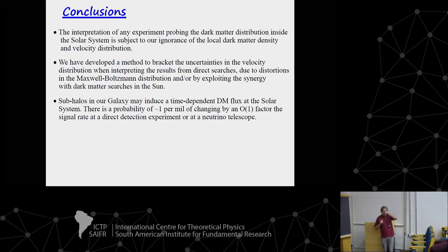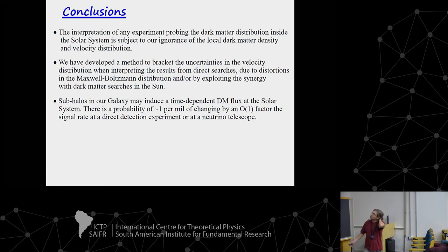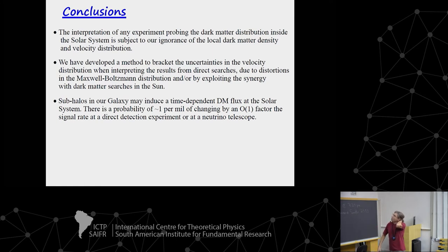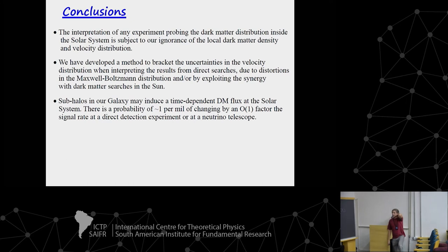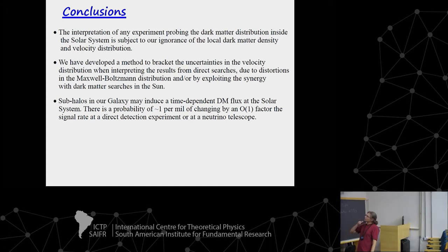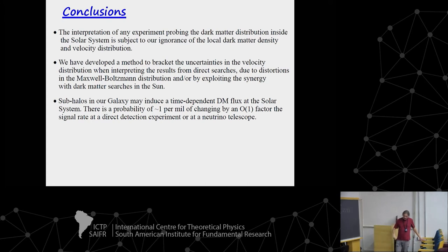In conclusion: the interpretation of any experiment probing dark matter inside the solar system — direct detection, annual modulation, or solar capture — is subject to our ignorance of the local dark matter density and, more importantly, the velocity distribution. This motivated us to construct a method to bracket these uncertainties using complementarity with neutrino telescopes or by considering distortions from the Maxwell-Boltzmann distribution. Subhalos in the Milky Way induce a time-dependent flux through the solar system, with a probability of about 1 per mil of changing the rate of experiments by a factor of order 1. Thank you for your attention.